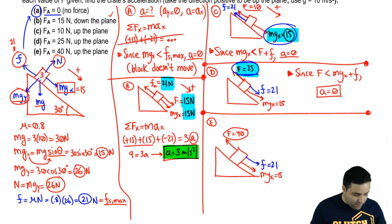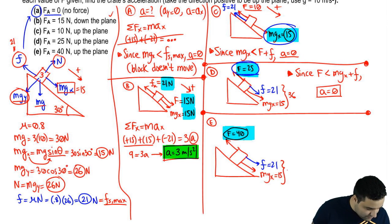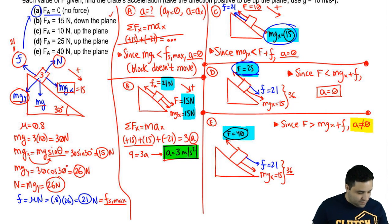The question here, is this 40 enough to go against the other two forces? And it is, because these two forces add up to 36, so 25 was not enough. These two forces add up to 36, so 40 is enough. So 40 is enough. Since F is greater than the two forces going against it, the acceleration will not be zero, which means I'm going to use F equals ma to find it.